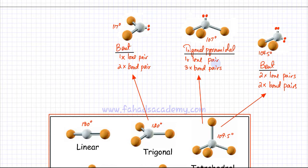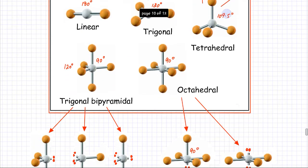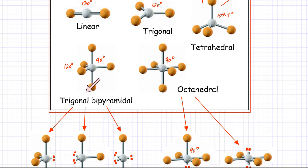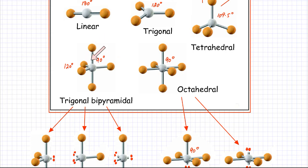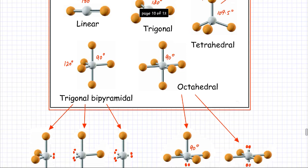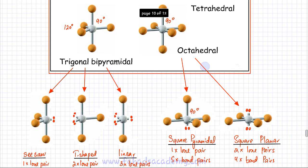The next basic geometry is called a trigonal bipyramidal arrangement. This is when you have five bonds. Three bonds in the middle are arranged in a fan-shaped manner — just like the blades of a fan — and the angles between these three bonds are 120 degrees. There is one bond sticking at the bottom and one bond sticking at the top, and these bonds make an angle of 90 degrees with the fan-shaped bonds. There would be three versions that can be derived from this trigonal bipyramidal arrangement.